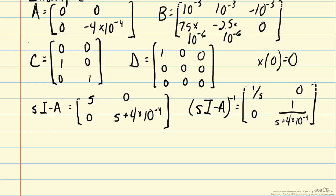Now let's calculate our transfer function, G(s), which is C times (sI minus A) inverse times B plus D. We can multiply the three matrices, C, (sI minus A) inverse times B, and then add to it D. When we do that, we get a three-by-three matrix.